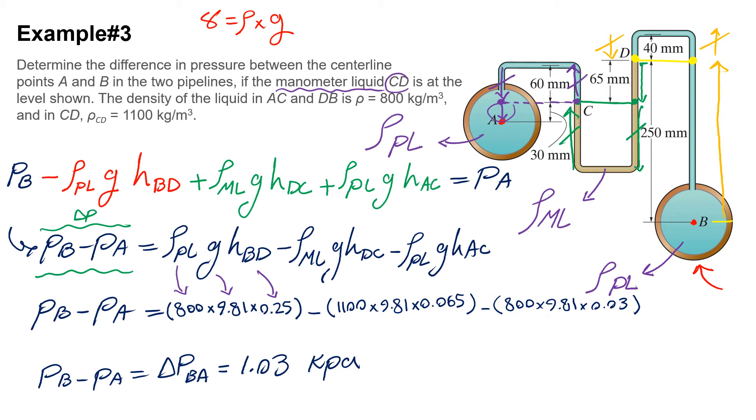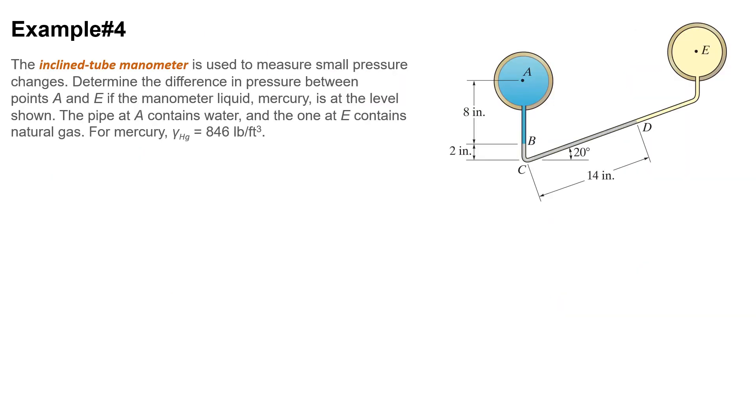Note that because this number is positive, it means that pressure at point B, or in pipeline B, is larger than pressure at pipeline A. So this is how you can use your knowledge of fluid mechanics to compare pressure in two pipelines.